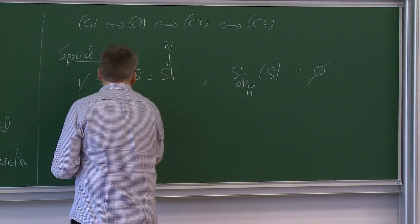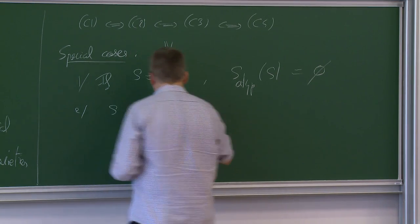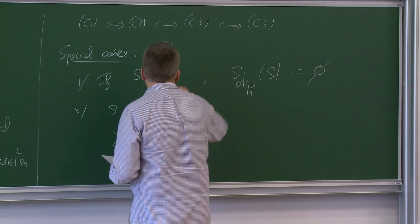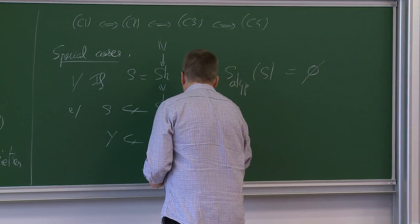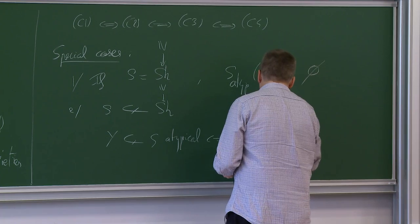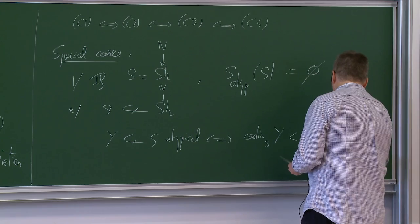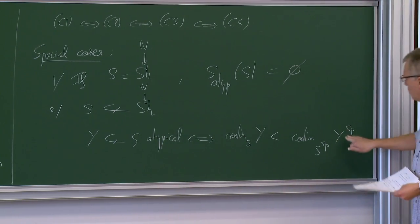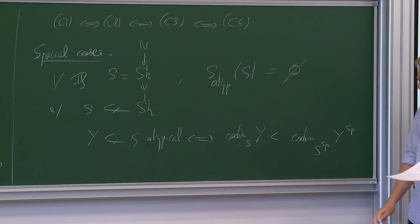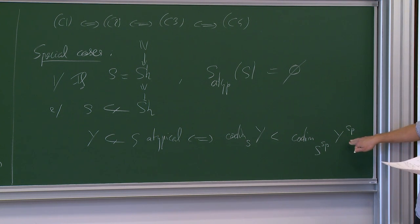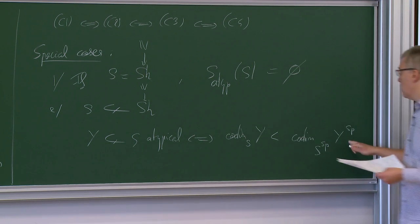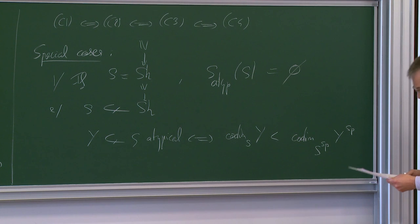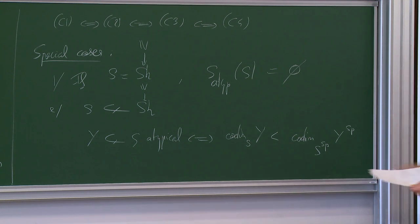Second case: suppose that S is a closed irreducible sub-variety of some Shimura variety, and now you look at the restriction of V to S. Then Y inside S is atypical if and only if the codimension in S of Y is strictly smaller than the codimension of the special closure of Y in the special closure of S. Here Y-sp is the smallest special sub-variety of your Shimura variety containing Y, and S-special is the smallest Shimura sub-variety containing S.